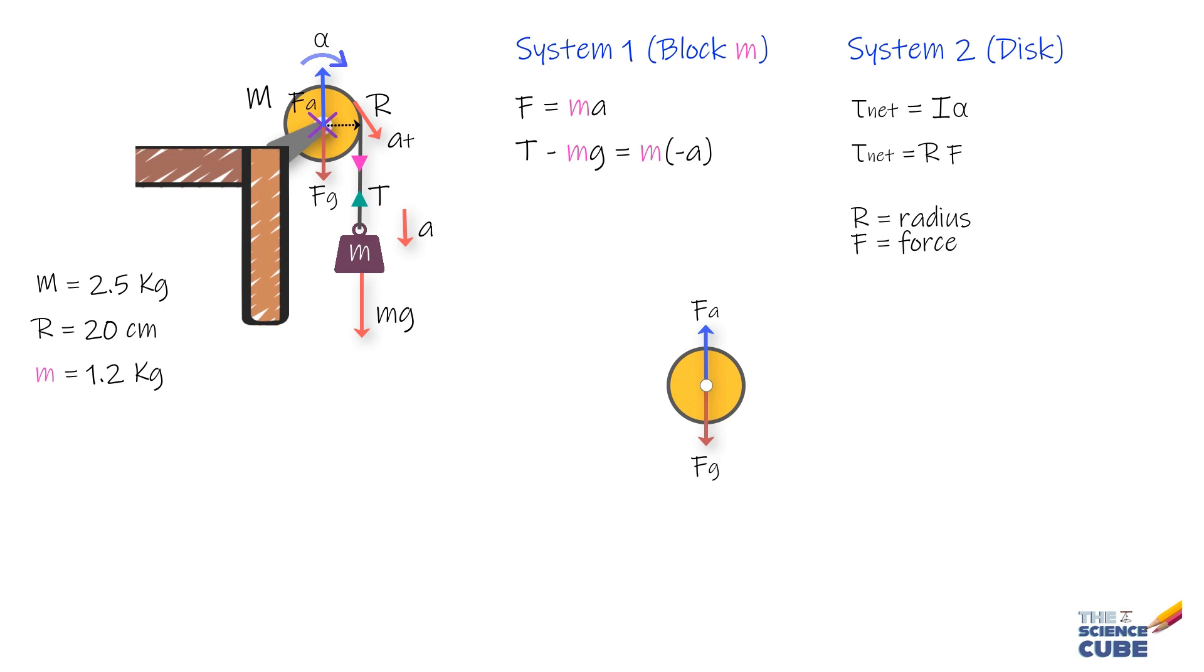However, we can see that the third force, that is tangent T acting on the disc due to the cord, acts at a distance r from the axis of rotation and is a tangent to the rim of the disc. That is, it is perpendicular to the position vector r here.